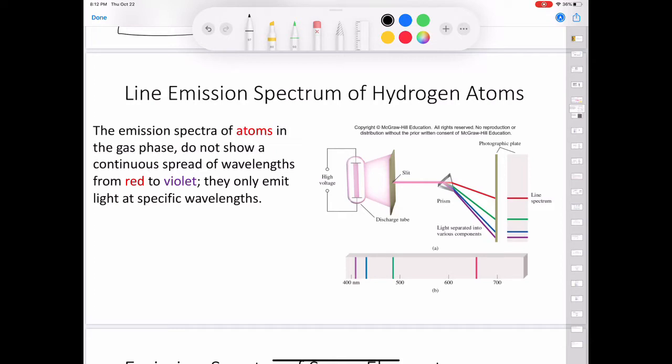Ever since the 17th century when Newton showed that sunlight is composed of various color components that can be recombined to produce white light, chemists and physicists have studied the characteristics of emission spectra. The emission spectrum of a substance can be seen by energizing a sample of material either with thermal energy or with some other form of energy such as a high voltage electrical discharge.